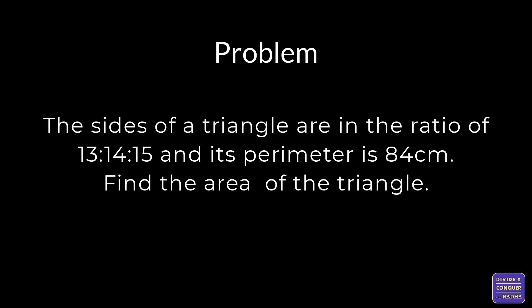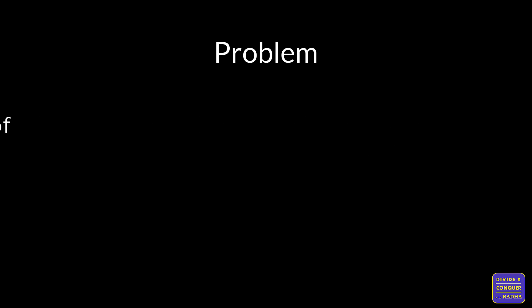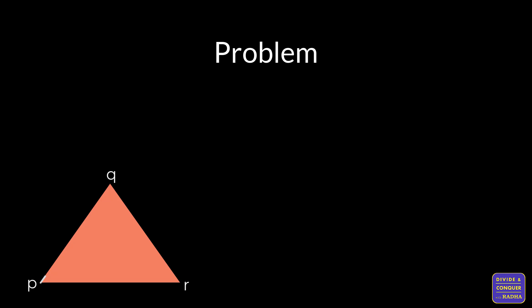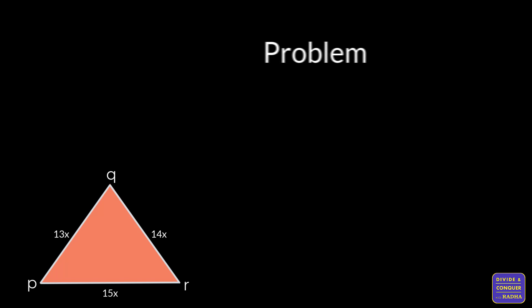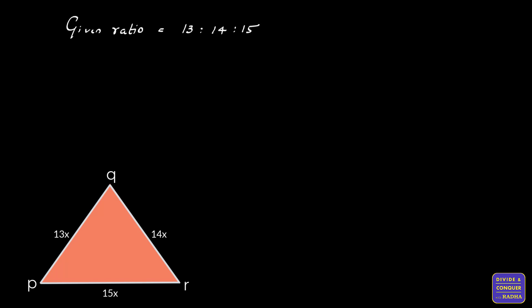The sides of a triangle are in the ratio 13:14:15 and its perimeter is 84 centimeters. Find the area of the triangle. In triangle PQR, let's assume PQ to be side a = 13, QR to be side b = 14, and PR to be side c = 15. The given ratio is 13:14:15.